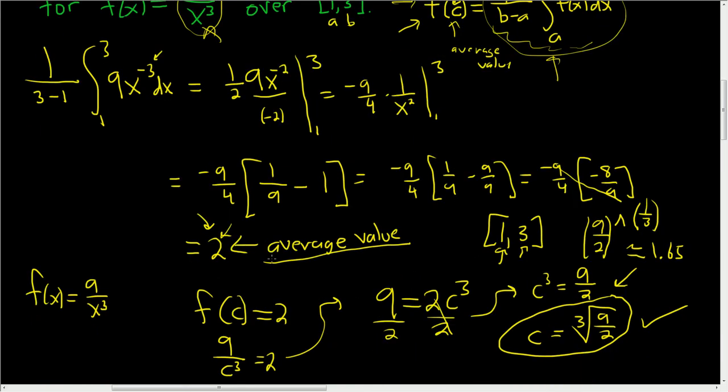And then just take f of x and set it equal to 2. In this case, it was 2. And that's what we did here. You don't have to call it C. You could have just done 9 over x cubed equal to 2, et cetera. So same deal. I hope that helped.